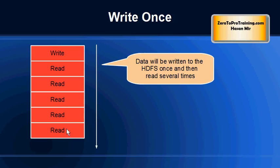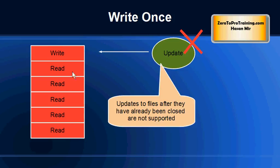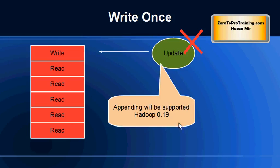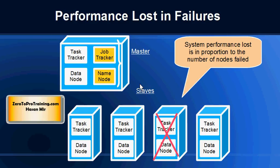The second characteristic that should be present in the application is that it will write the data and then read it again and again — it will not be updating the data that it has written. Updating what you have written is not possible for closed files. However, in release 0.19, appending will be supported on files that are not closed. So once you close the file, it cannot be updated in Hadoop.